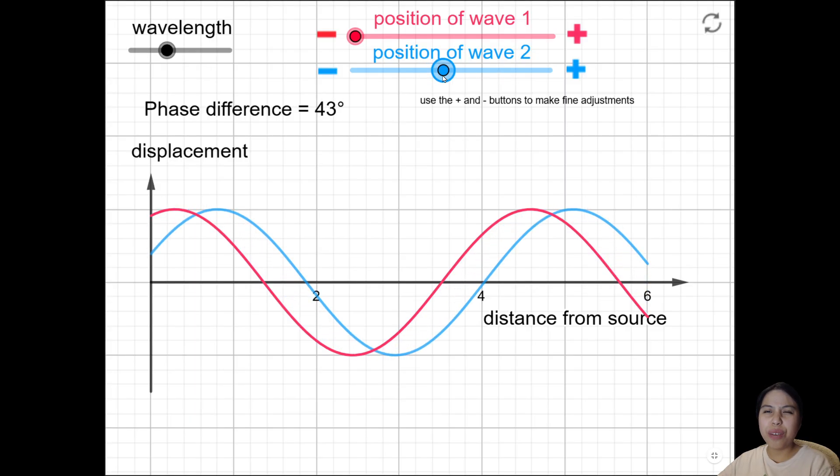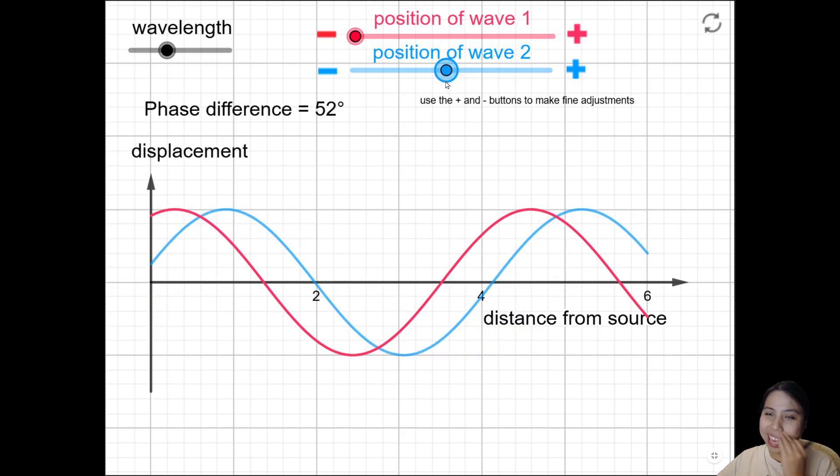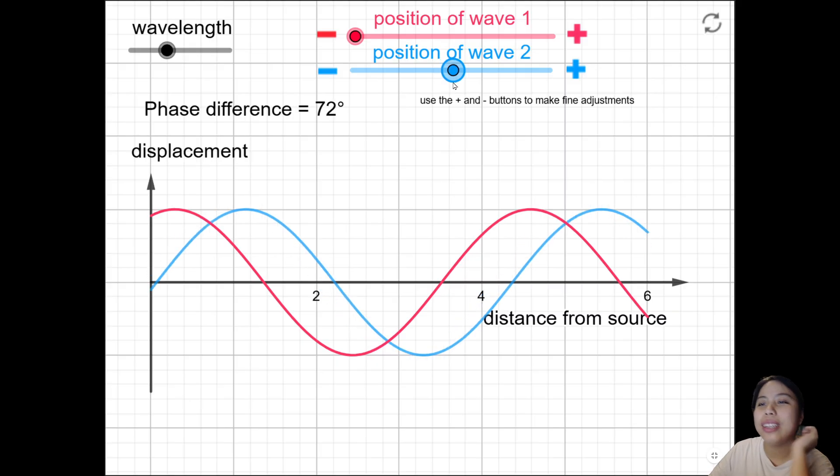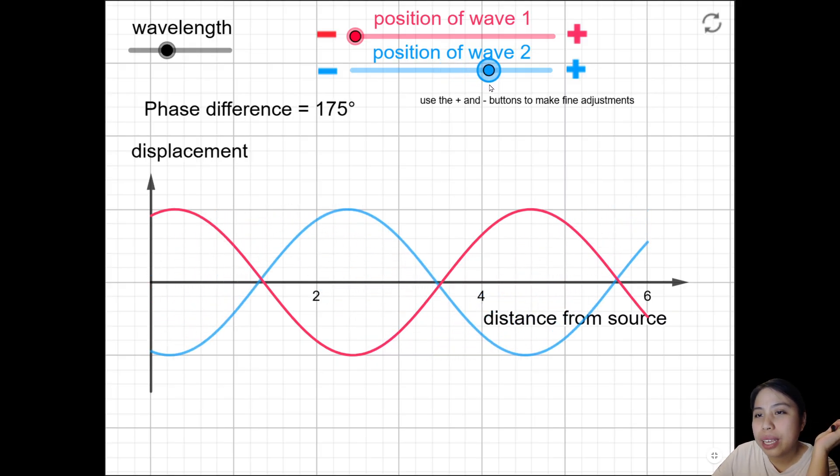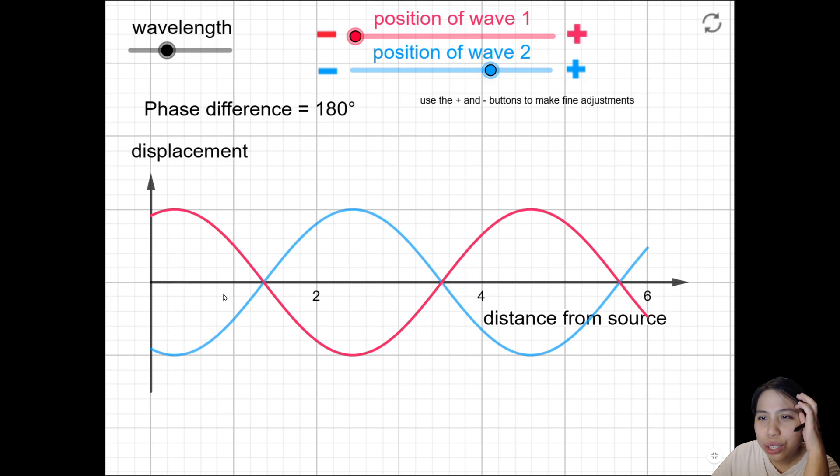But if we increase the lag, think of it as lagging - now this blue wave is lagging behind the pink color one. So how do we find this angle? Do we just somehow know? In a way, yes, if you can see the wave pattern.